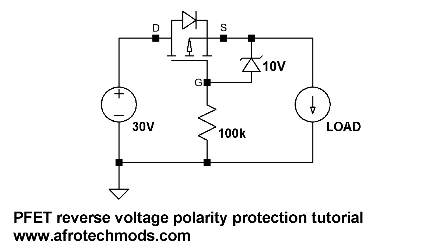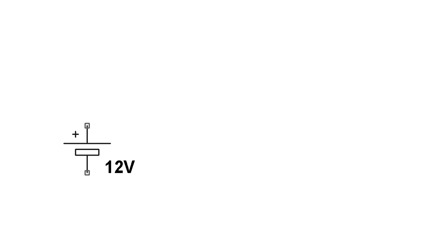In this video I'm going to show you a couple of ways to protect your circuits from backwards power connections. So let's say you have a 12 volt power source, like a battery, and you want to power something.